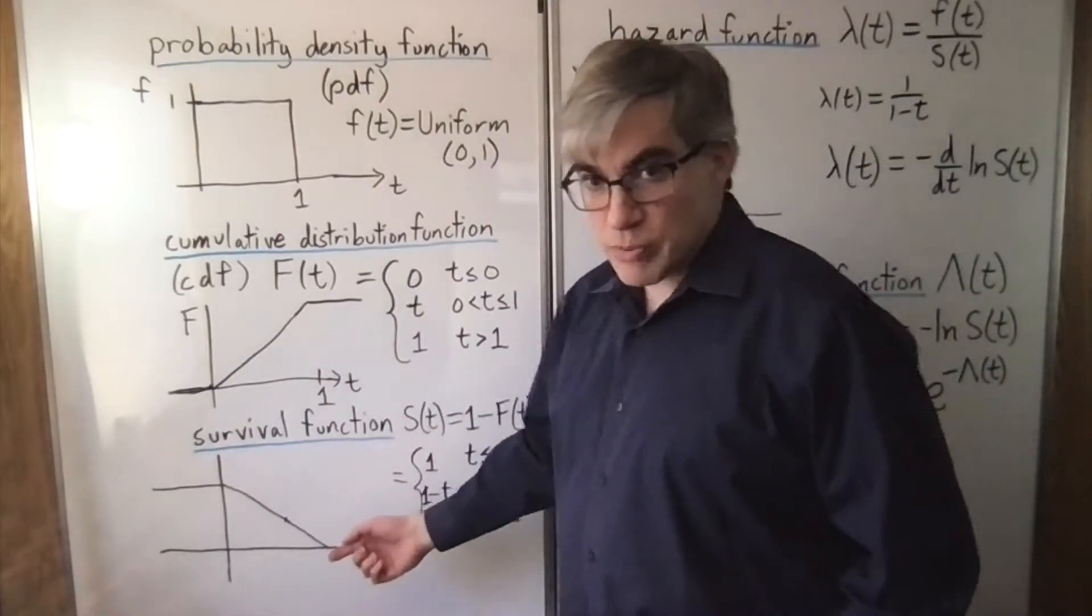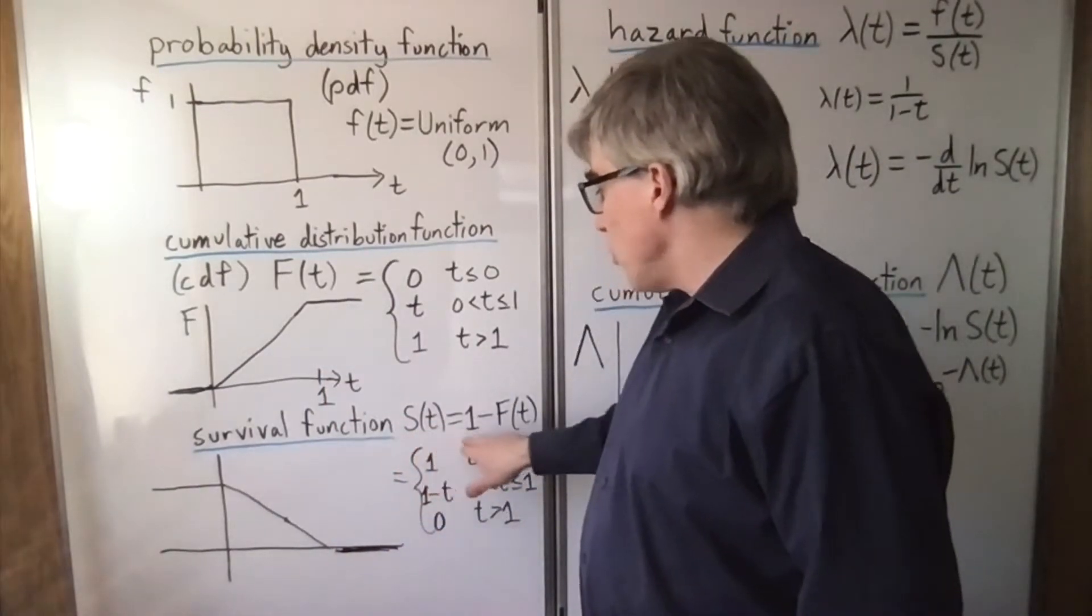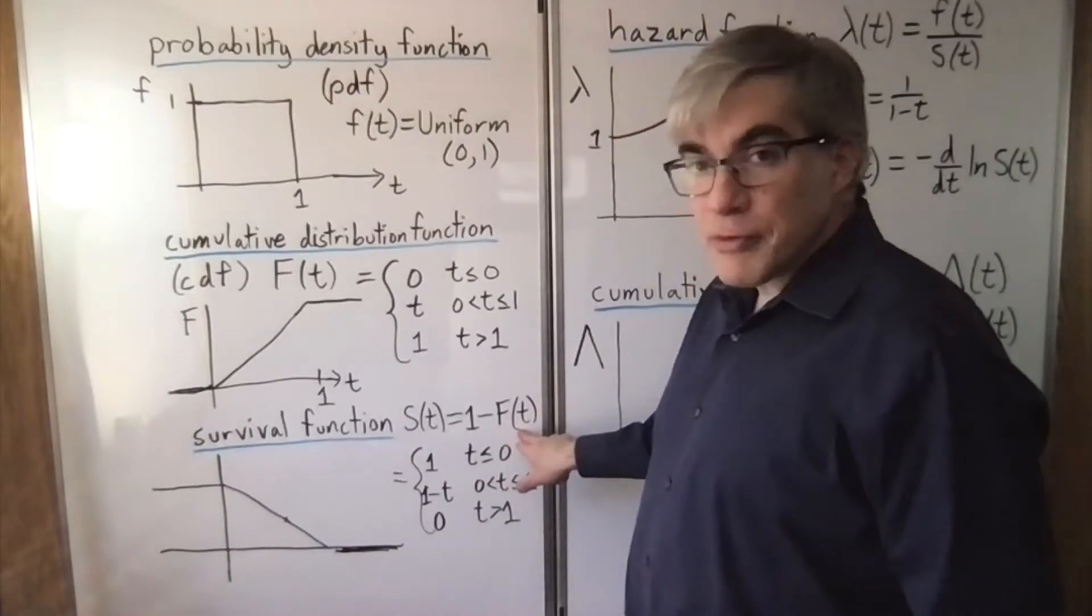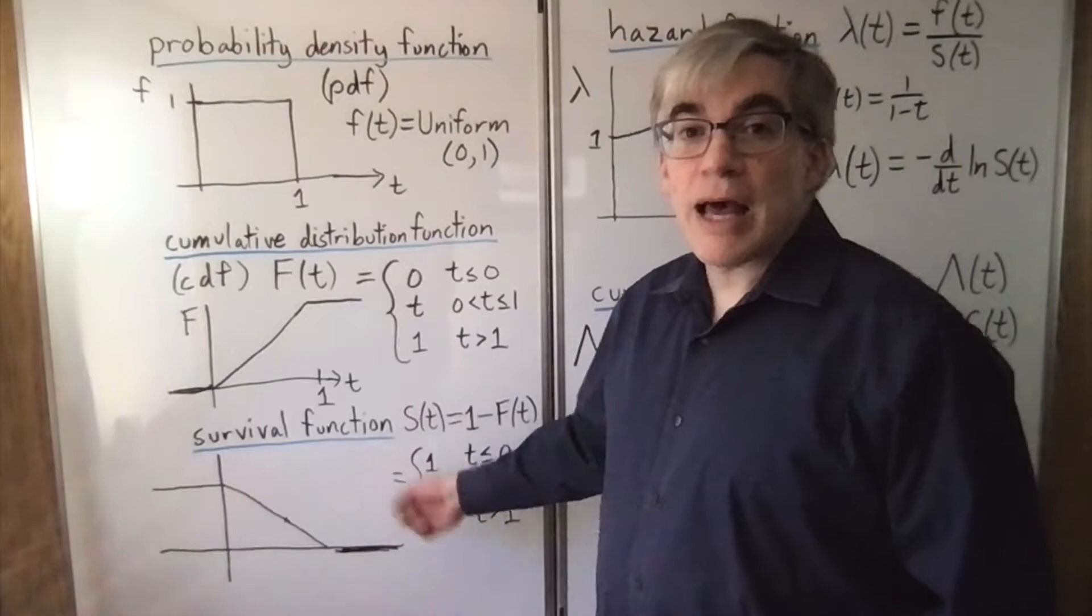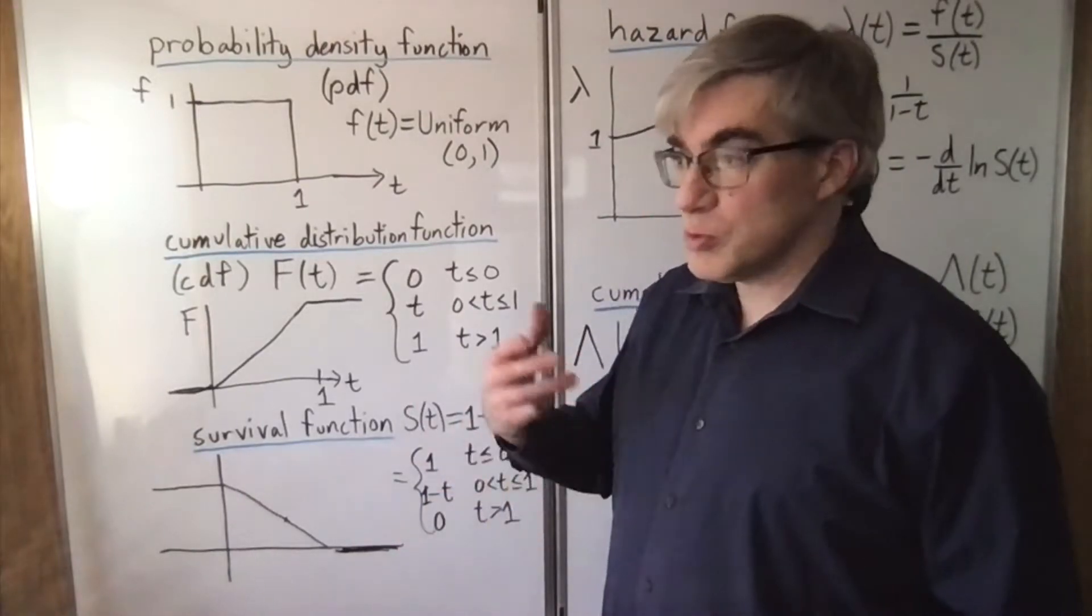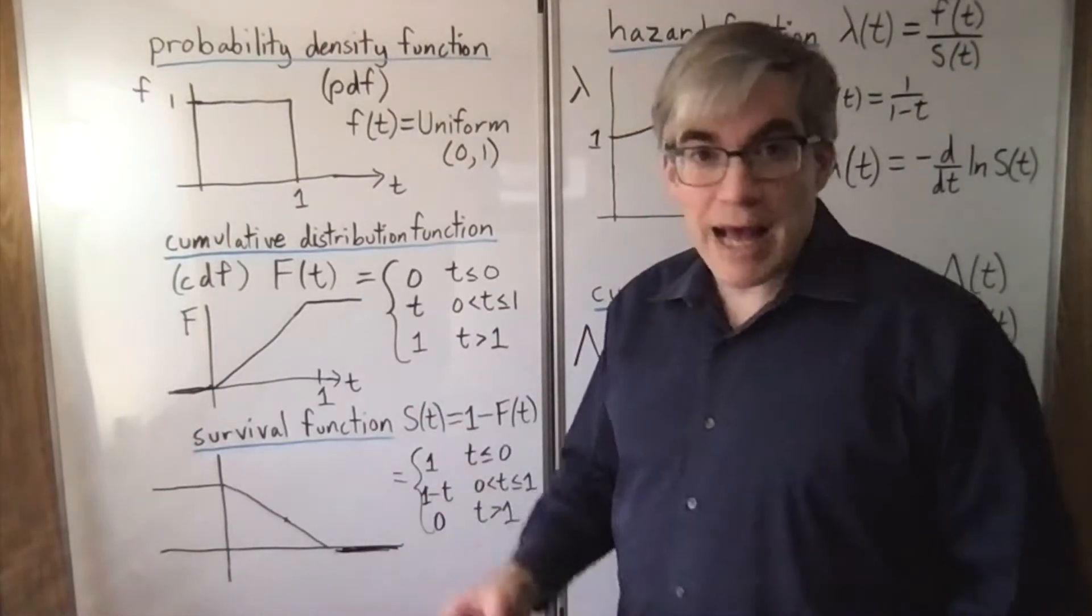The survival function might be new to you. This is 1 minus the CDF. Simple enough change. That is the probability that the event has not happened yet. If you're waiting for something to fail, this is the probability it hasn't failed yet.